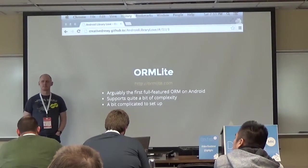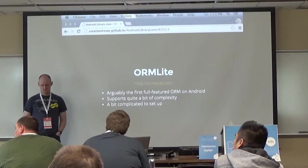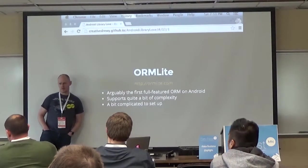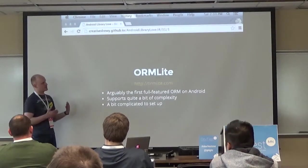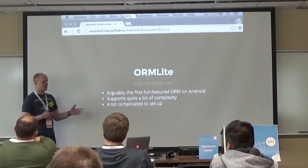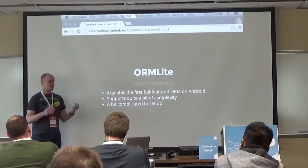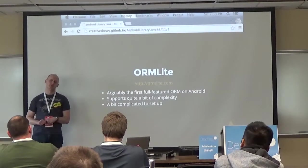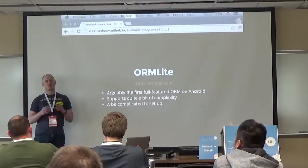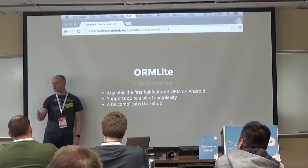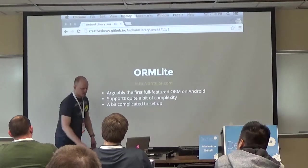OrmLite uses model objects with table annotations. One thing to note: if you try to use the same models with both Retrofit and OrmLite annotations, it doesn't always work cleanly because Retrofit models are based on JSON field names which may not match your database column names. The workaround is the @SerializedName annotation - you can name your property whatever you want, then tell the JSON parser what the actual JSON name is.